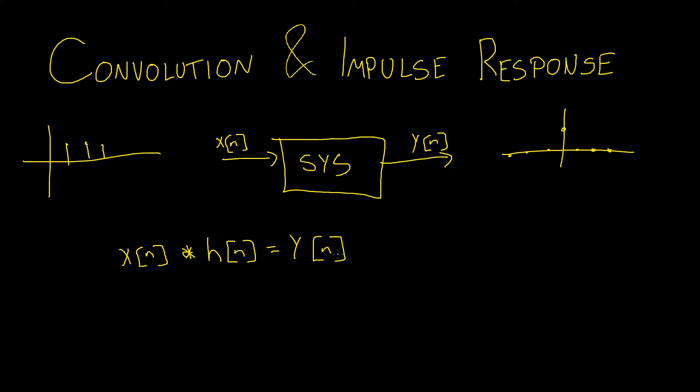In convolution we add in a signal, we convolve it with another signal, and then we get out a signal. And this whole process here is simply simulating how the system would modify our signal as it was being passed through.